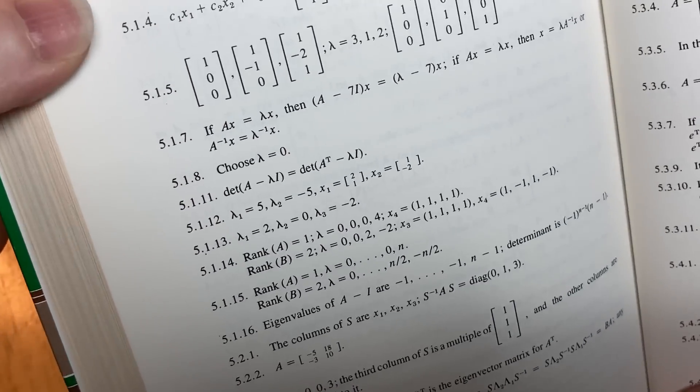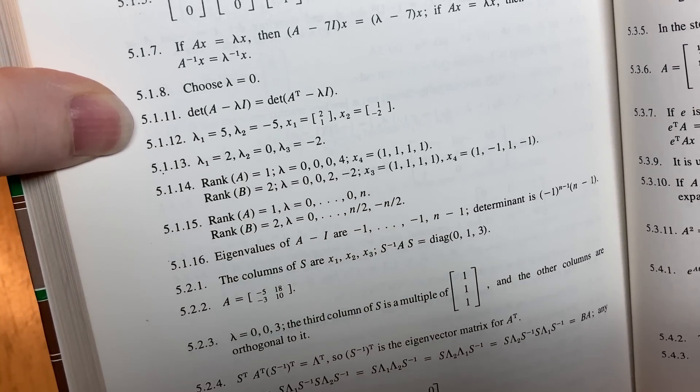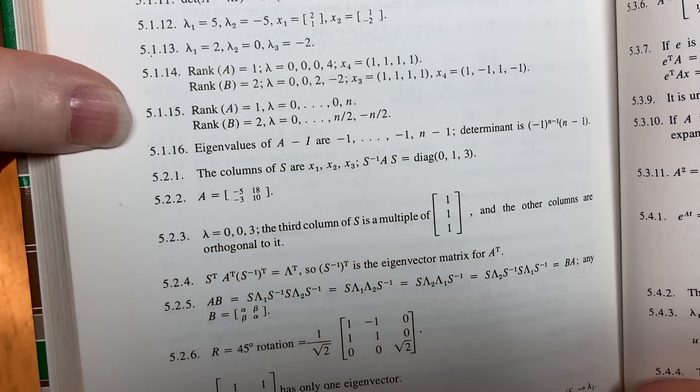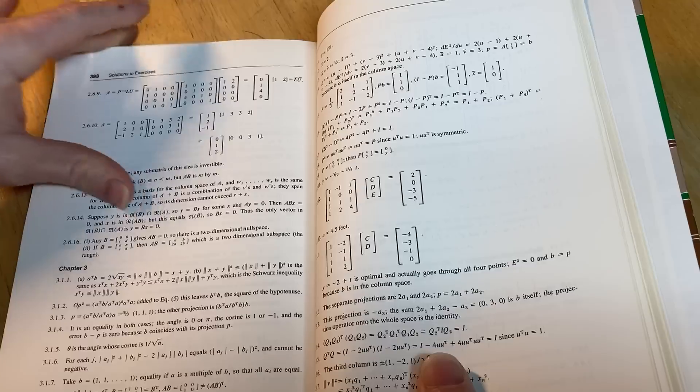You can see here it has pretty much every answer: two, three, four, five, okay six is missing, seven, eight, nine and ten are missing, eleven, twelve, thirteen, fourteen, fifteen, sixteen, a couple missing there. So pretty much every problem has a solution.